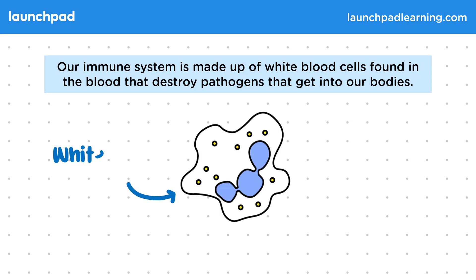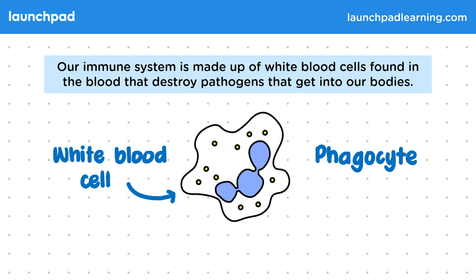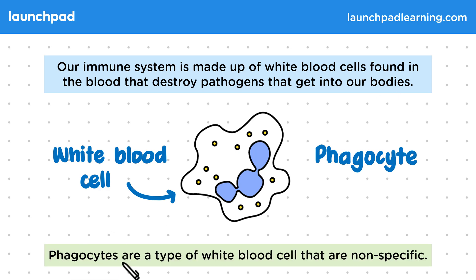This diagram shows a white blood cell. A phagocyte is a type of white blood cell found in our blood. Phagocytes are non-specific, meaning they defend against all pathogens, not just specific ones. For the exam you need to be familiar with white blood cells in general and the different ways in which they defend against pathogens.